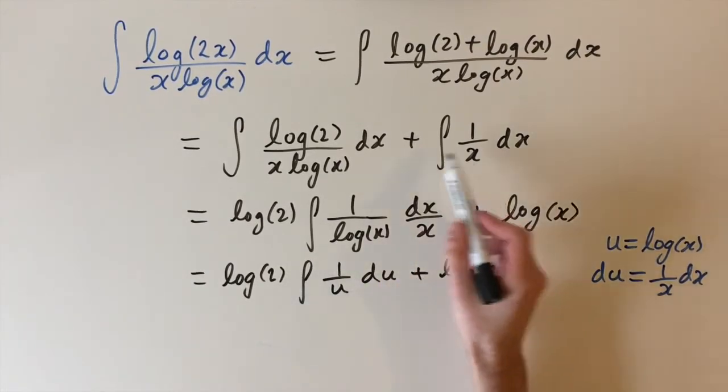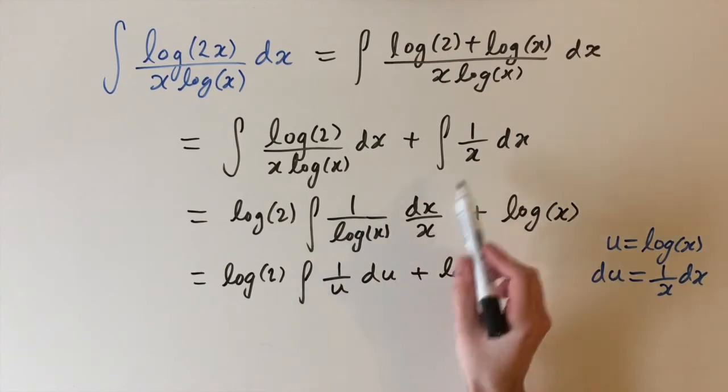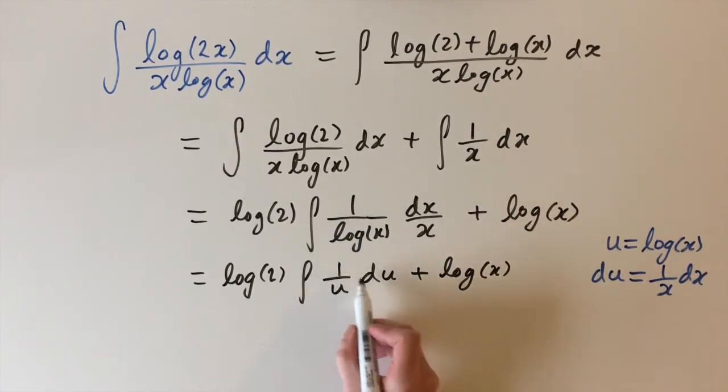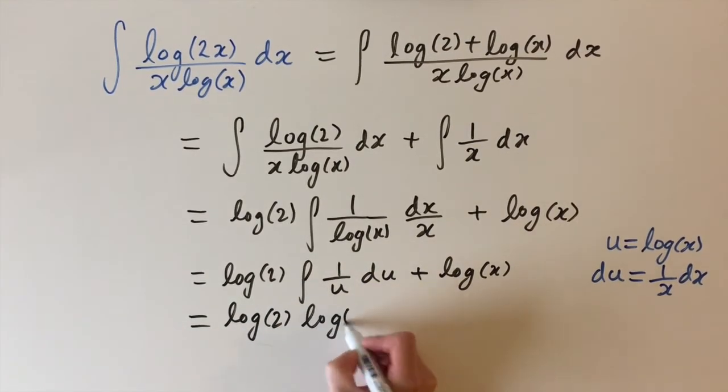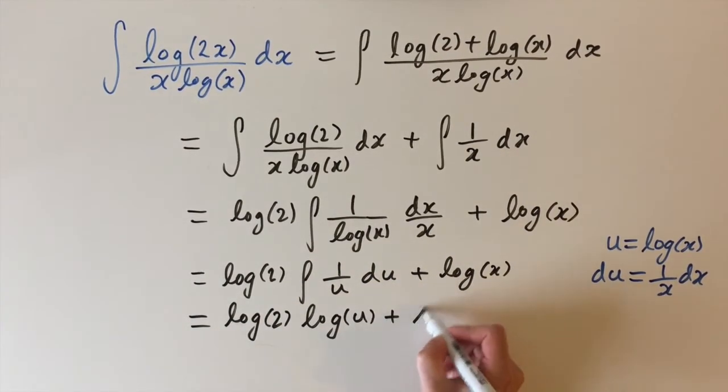So this is actually exactly the same integral up here, except the x is replaced by u. And we know this is just going to be log of u. So we have log of 2 times log of u plus log of x.